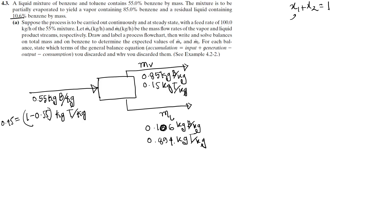In this case, we can do the degree of freedom analysis. We can see that the number of unknowns equals the number of equations, meaning the system is solvable.